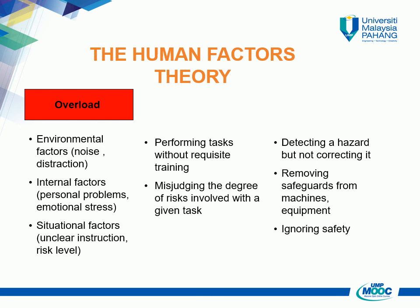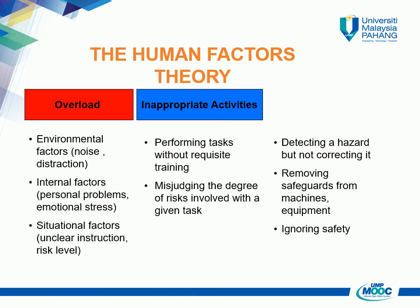There are three factors that magnify the workload: environmental factors such as noise and distraction; internal factors such as personal problems and emotional stress; and situational factors, for example unclear instructions and taking a certain risk level. Human error also includes doing inappropriate activities, such as performing tasks without requisite training or misjudging the degree of risk involved with a given task.